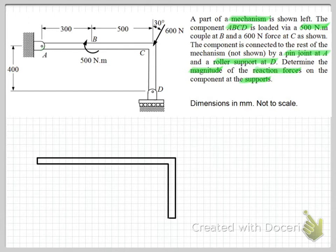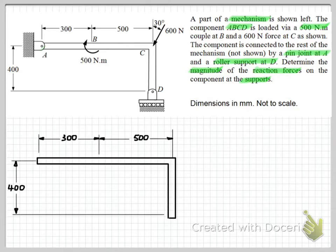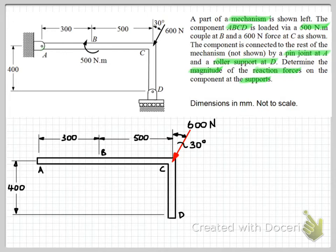Once we have that, we can start to add in some dimensions on our drawing just for reference. We should also add in the labels for the points that we're referencing in our solution. Then we can start adding in the forces — starting with the ones that we know, the applied loads. We have the 600 newton force at 30 degrees to the vertical axis, and our couple moment of 500 newton metres applied at point B.